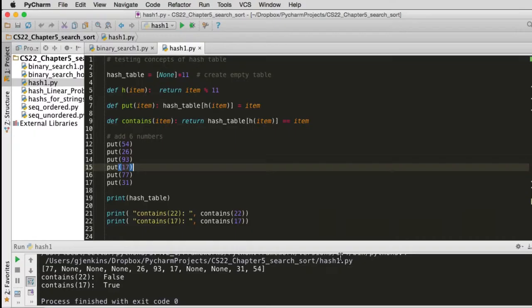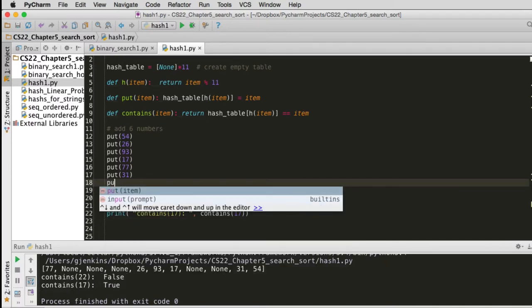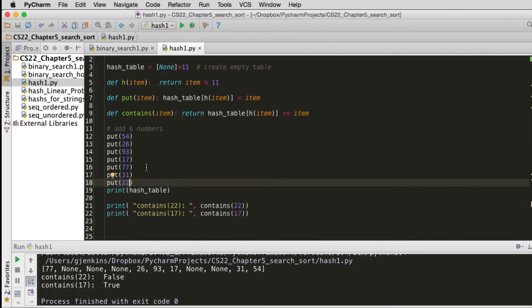Okay, so we have our code here and we've already run it. So what I'm going to do here is add one more item. So we're going to put 22. So we're adding one more item. And then we print the hash table. And then we're going to ask, does it contain 22? Does it contain 17? And let's put one more print. We're going to ask if it contains 77. So 77 was in the table. So this should return true. 17 should return true. And 22 should return true if everything's working. So let's go ahead and run it.